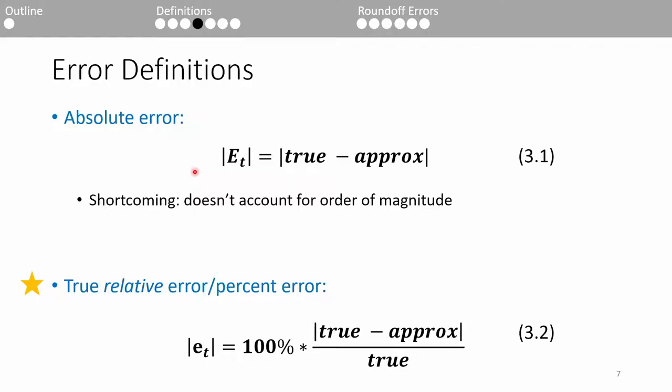If we're measuring something in feet, the error will also be in feet. But there's one shortcoming with this definition. It doesn't account for the order of magnitude. For example, an error of one minute is much more significant if we're counting the hours versus if we're counting the days. To rectify this problem, we can define the true relative error, or percent error, as lowercase e sub t equals 100 percent times the absolute value of the true value minus the approximate value, all over the true value. By normalizing the error with respect to the true value, we eliminate the units and we can see how large the error is relative to the actual value. We frequently use this metric, so please commit it to memory.